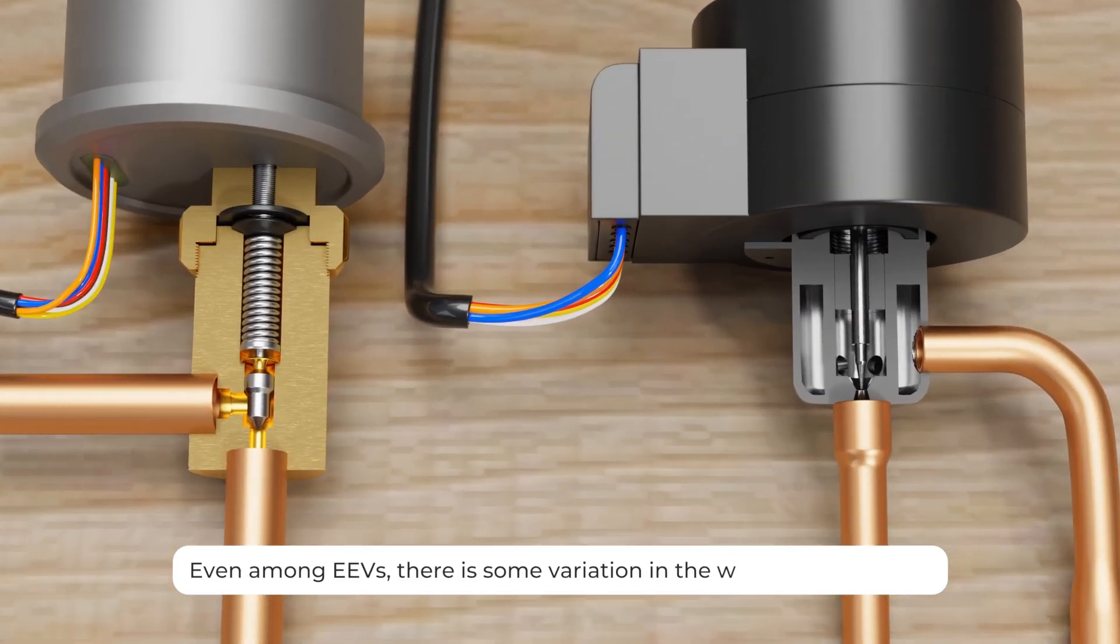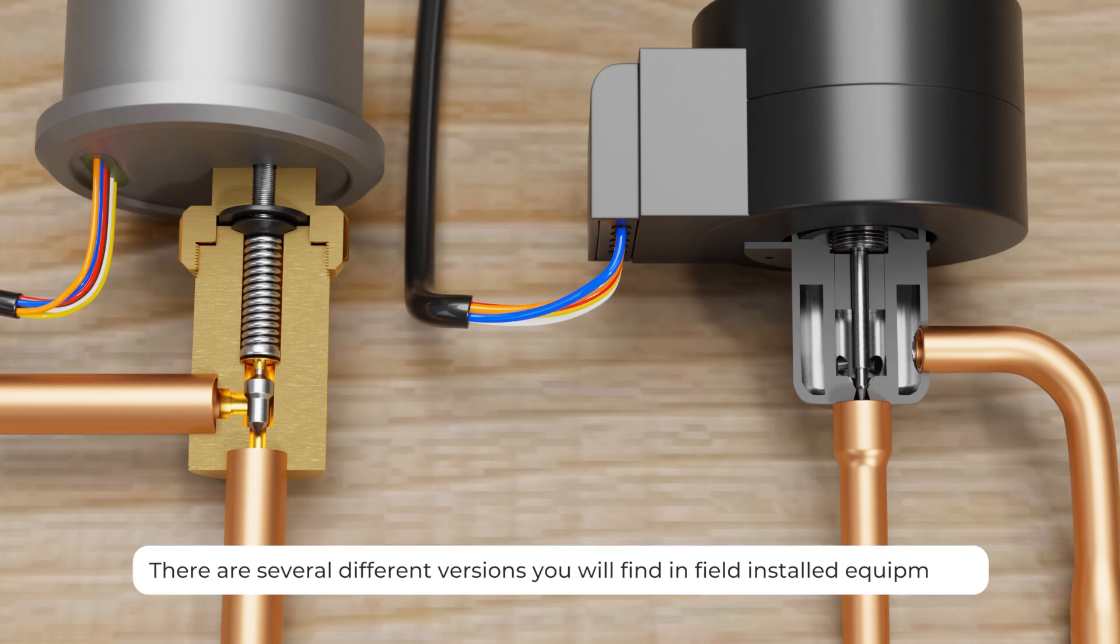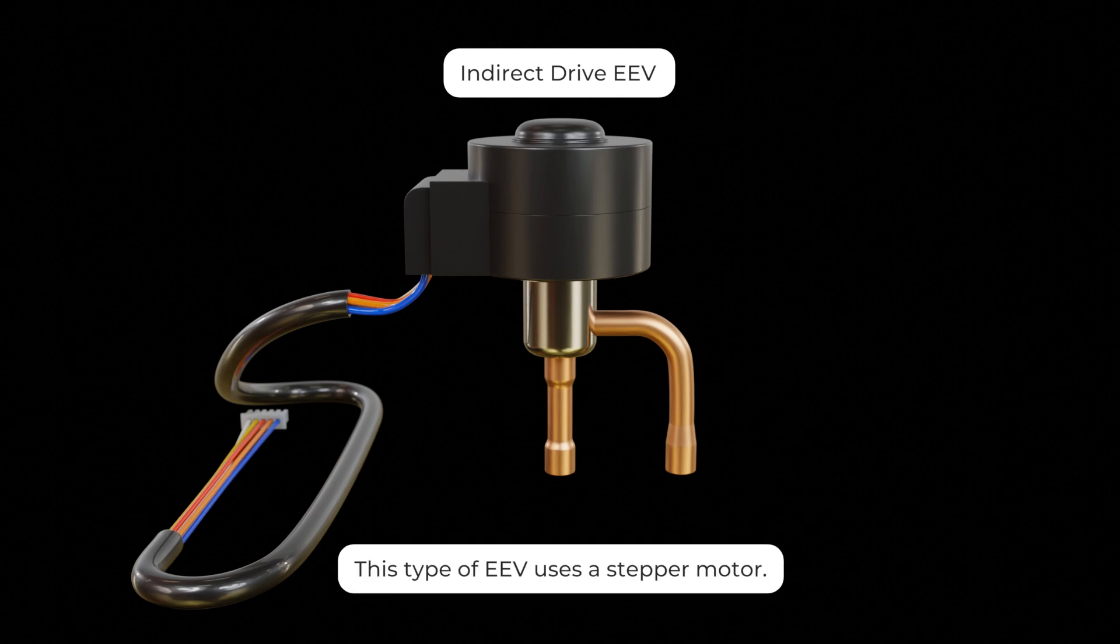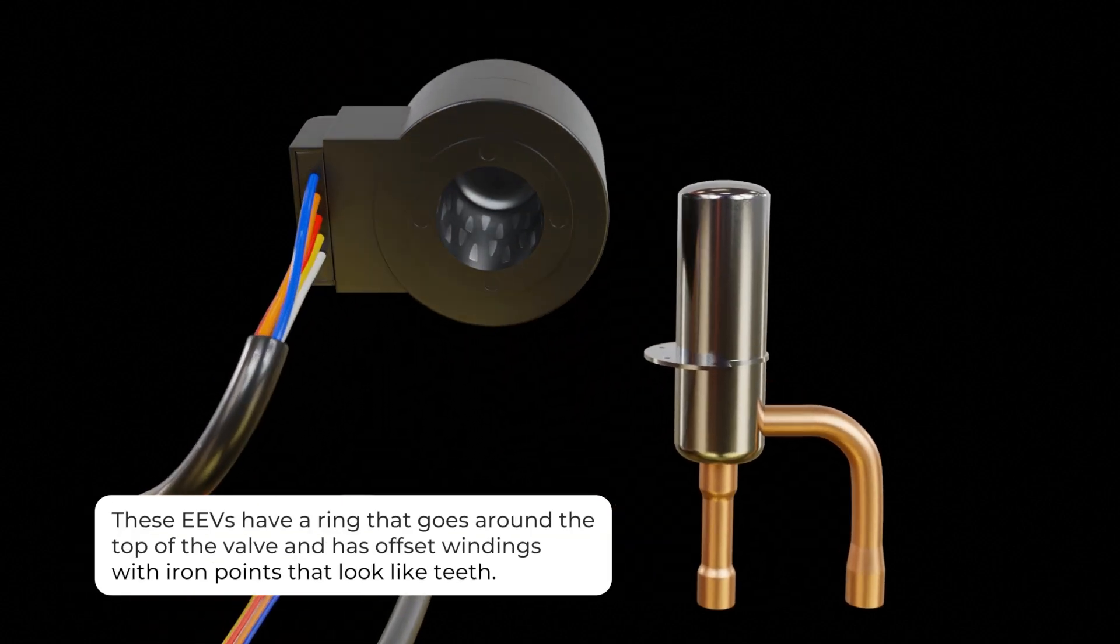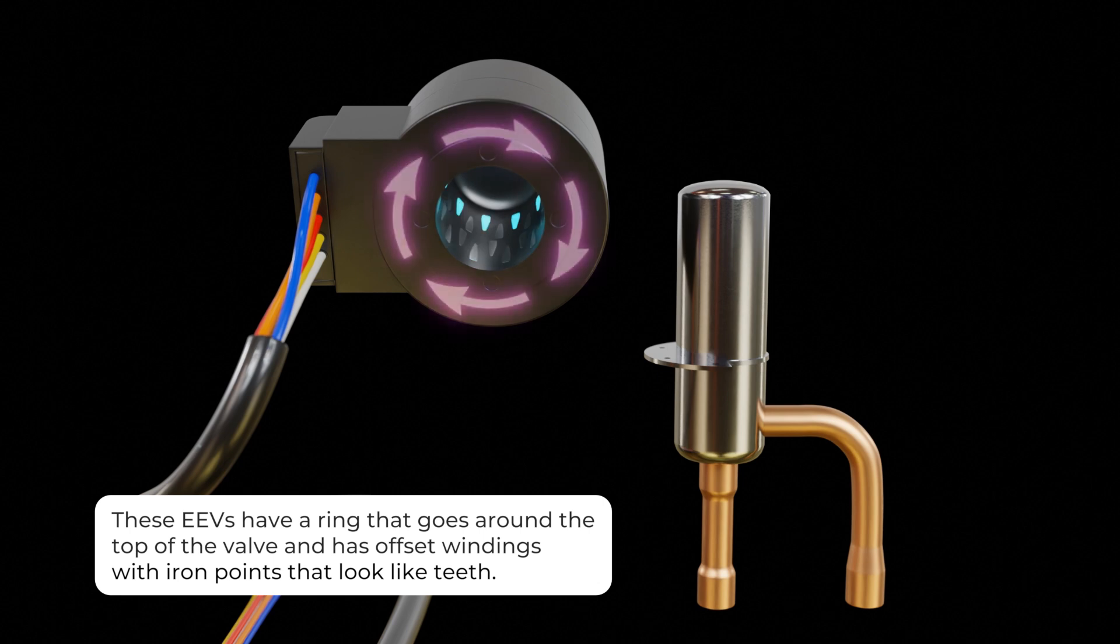Even among EEVs there is some variation in the way they modulate because there are several different versions you will find in field installed equipment. The first type of EEV uses a stepper motor. These EEVs have a ring that goes around the top of the valve and has offset windings with iron points that look like teeth.